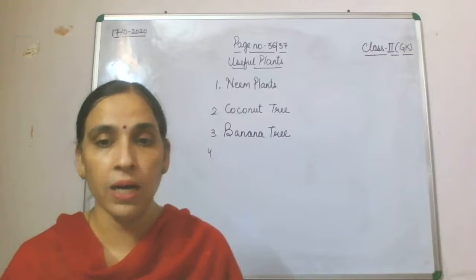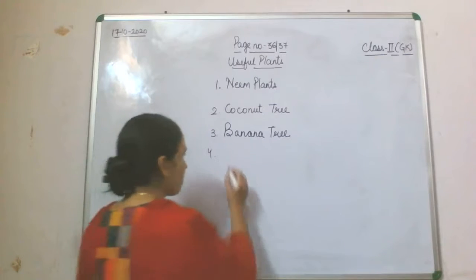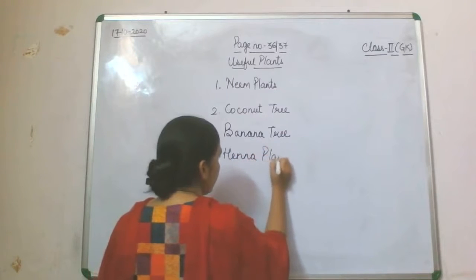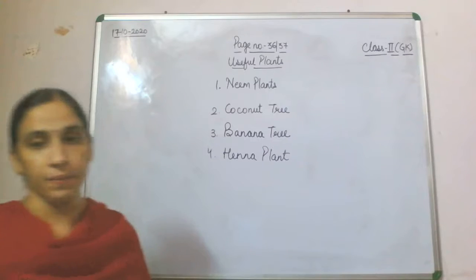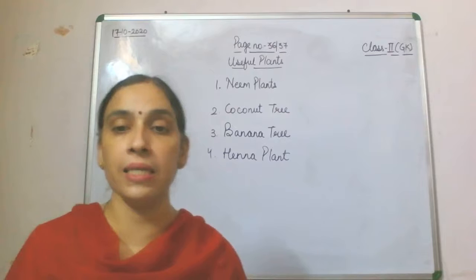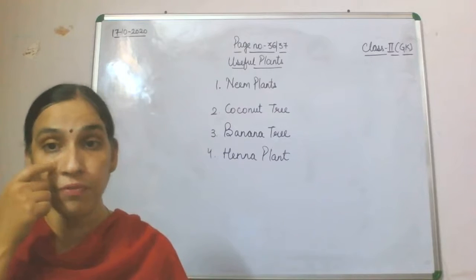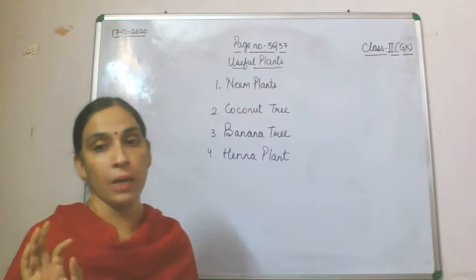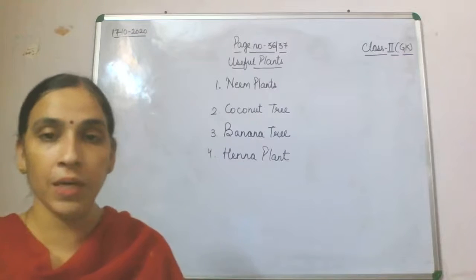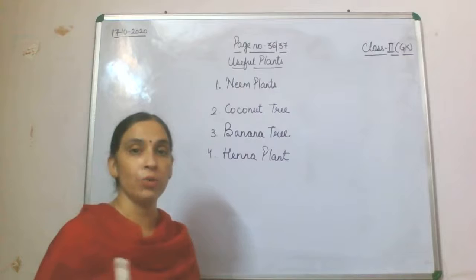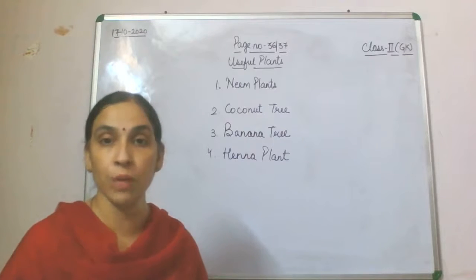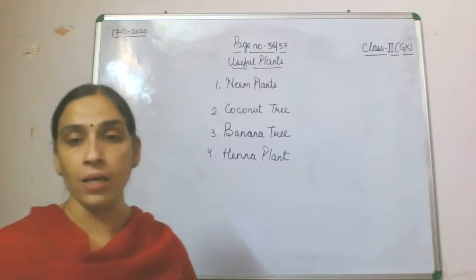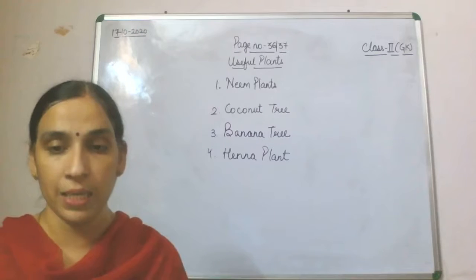Now we'll come to the next plant, that is the hena plant — also called mehendi. The hena plant is used to color hands, hair, and fingernails, and also for coloring fabric. The dye it gives is a reddish-brown color, which is put on hands, hair, and fabric. This hena plant is also used for printing.